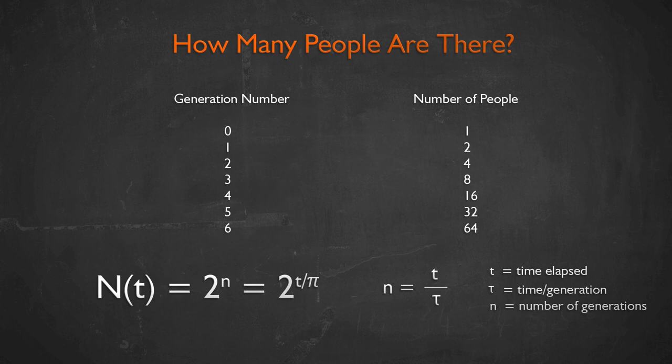If we want to talk in terms of time rather than generations, every generation takes some amount of time. For humans, you might say it takes 30 years. So n, the number of generations, is the total elapsed time divided by 30 years. We can write the formula as N = 2^(t/τ), where τ is the generation time — in this case, 30 years.